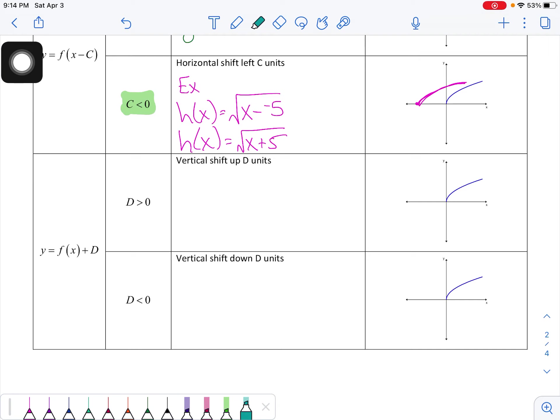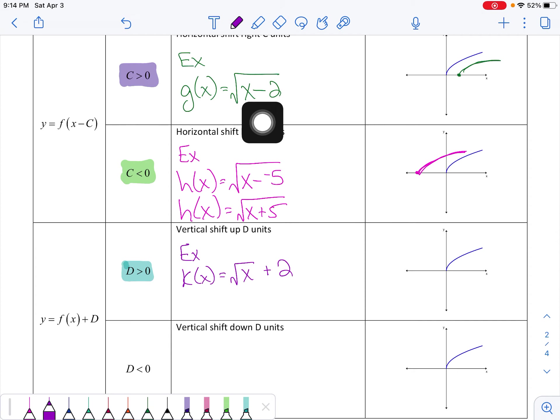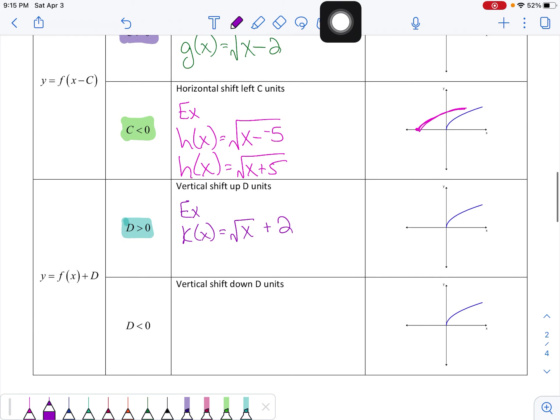Last two for this video are what happens with d. D is the straightforward one. These are my absolute favorite because they're the most straightforward out of everything. These are your vertical shifts. So if d is greater than 0, which means it's positive, let's say we have k of x is equal to the square root of x, and then I'm adding 2 to the entire function. This is a vertical shift. So every single point just moves up 2 units.